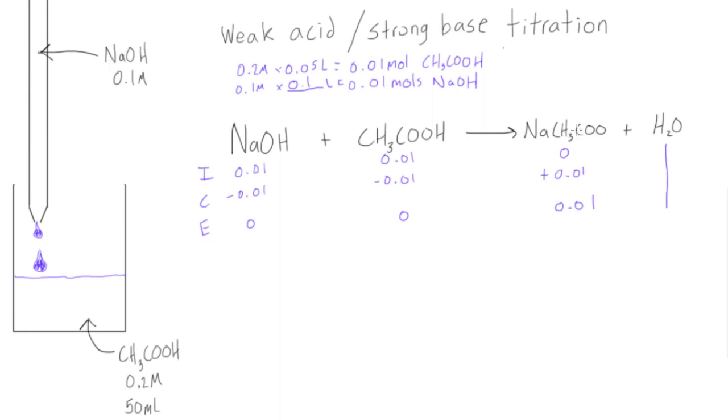This is what's in our beaker. We don't have any NaOH left, we don't have any acetic acid left, all we're left with is this NaCH3COO and water. Let's find the molarity of this. It will be 0.01 moles divided by 0.15 liters, and this is 0.067 moles per liter.